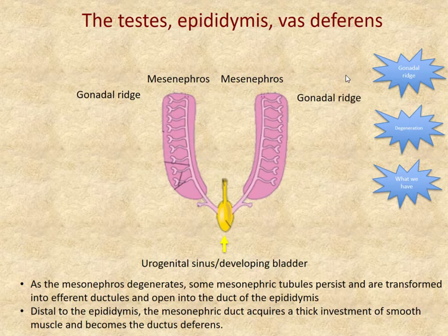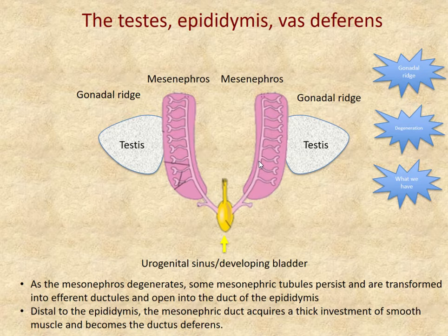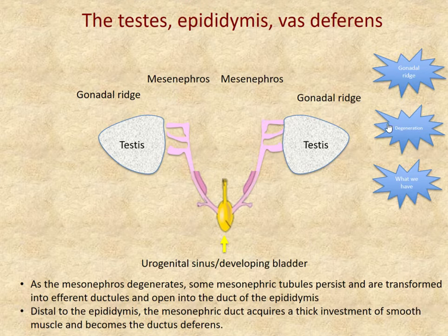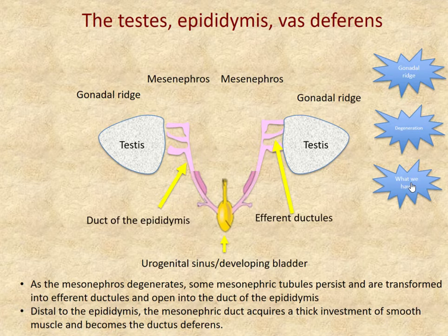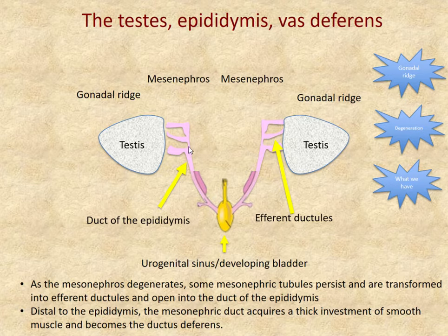The gonadal ridge sits next to the developing mesonephros on the medial side. Both mesonephroi degenerate, leaving remnants: the efferent ductules from mesonephric tubules connect to the rete testis, and the larger mesonephric duct, extending all the way down, becomes the epididymis and vas deferens connecting to part of the urethra.